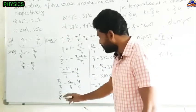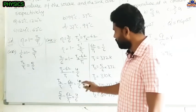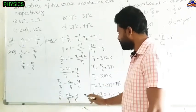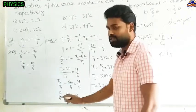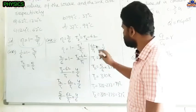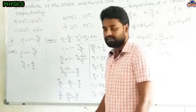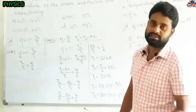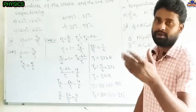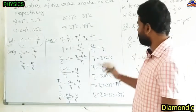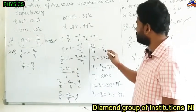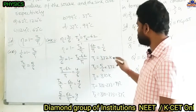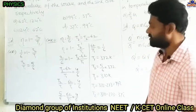Substituting T₂/T₁ = 5/6: 5/6 − 62/T₁ = 4/6. Rearranging: 62/T₁ = 5/6 − 4/6 = 1/6. By cross multiplication: T₁ = 62 × 6 = 372 Kelvin.